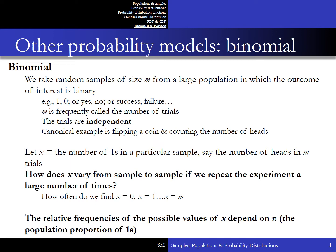M is frequently called the number of trials, and we assume that the trials are independent of each other — the outcome of one does not influence the outcome of any of the others. A canonical example is flipping a coin and counting the number of heads that we get. Let x equal the number of ones in a particular sample, say the number of heads in M trials.